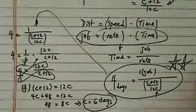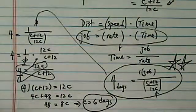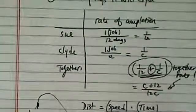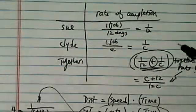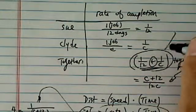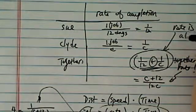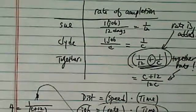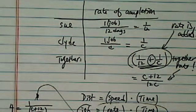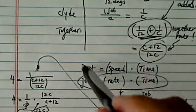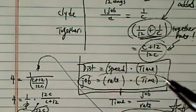So it will take Clyde 6 days to paint by himself. Let's review a little bit. The trick is that when they work together, their rate is added — not the time — because it doesn't make sense for time to be added, since time is less when they work together. Once you have the combined rate, you use that second important relationship.